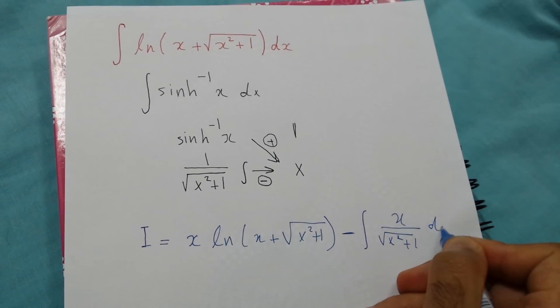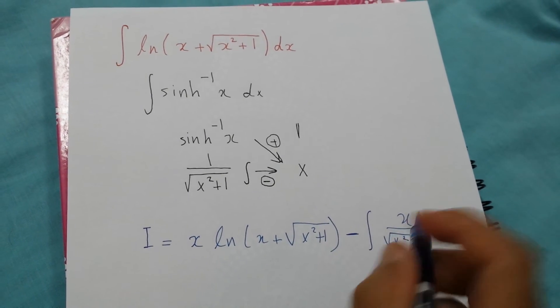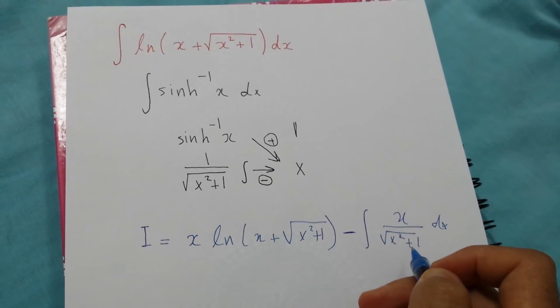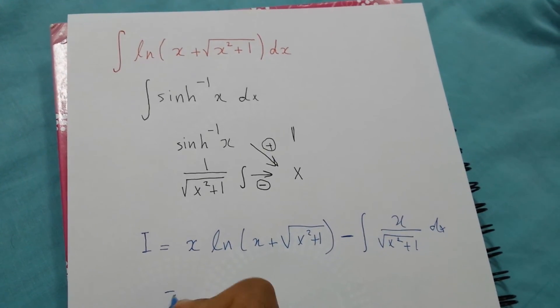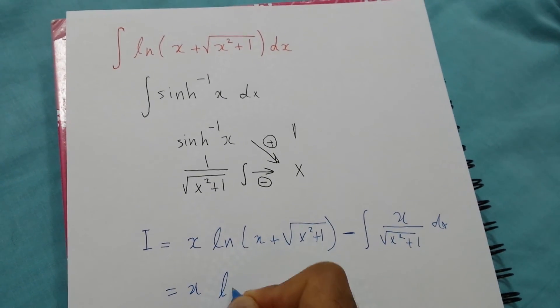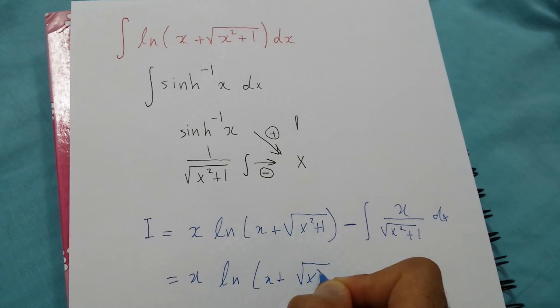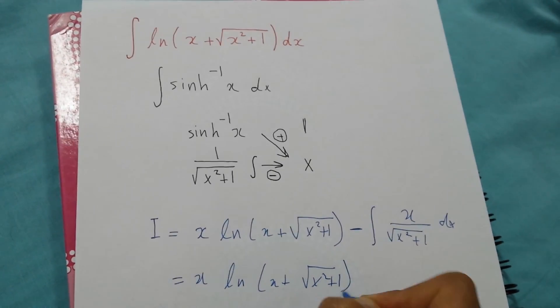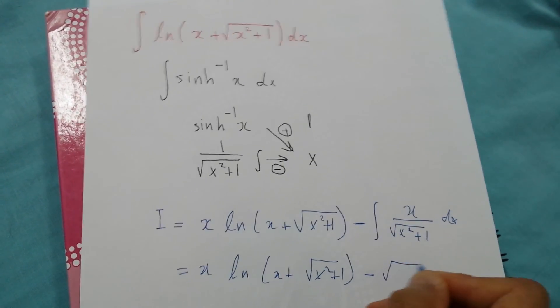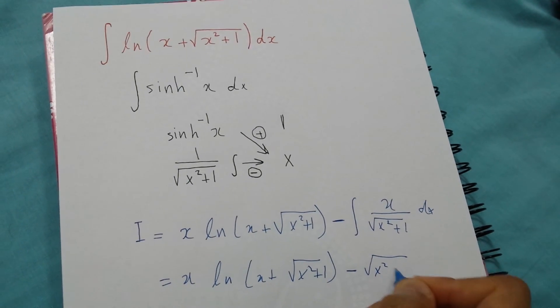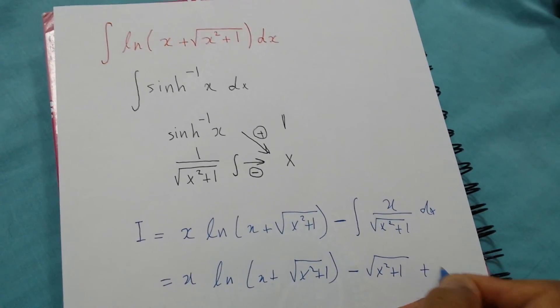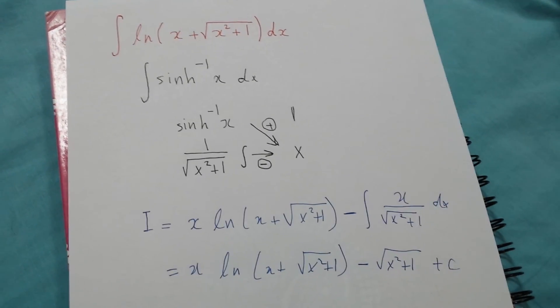It's √(x²+1). So the final answer is x·ln(x + √(x²+1)) - √(x²+1) + C. Thank you.